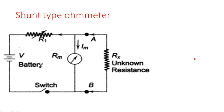What is the position of the unknown resistor and the meter now? The unknown resistor is connected in parallel with the meter. That is why it is called a shunt type ohmmeter. In the previous case, the meter was connected in series with the unknown resistance — that is why it was a series type ohmmeter.